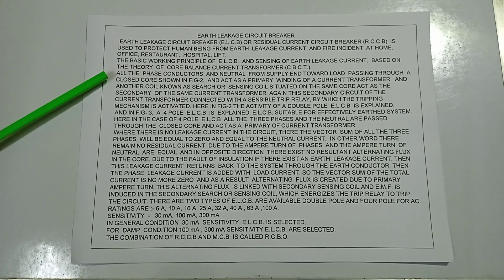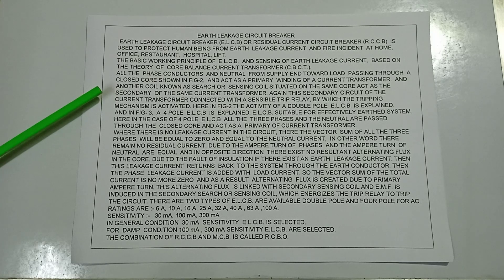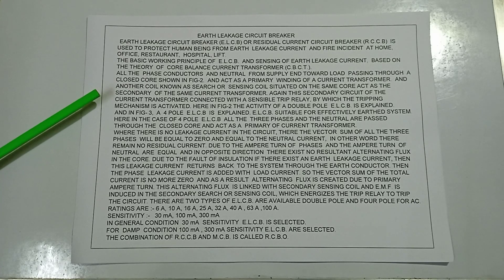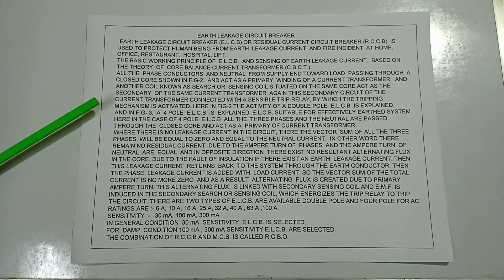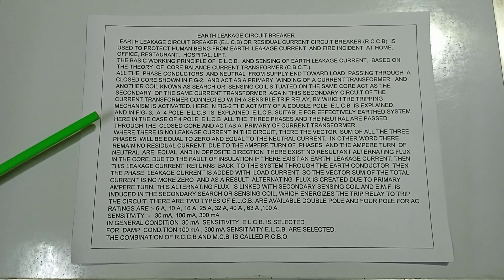All phase conductors and the neutral from the supply end toward the load pass through a closed core, as shown in Figure 2, and act as the primary winding of a current transformer. Another coil, known as the search or sensing coil, situated on the same core acts as the secondary of the current transformer. This secondary circuit is connected with a sensitive trip relay by which the tripping mechanism is activated.